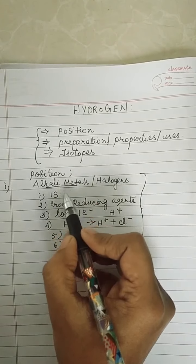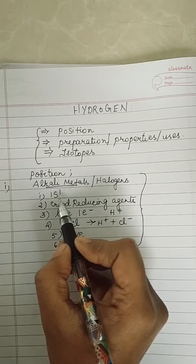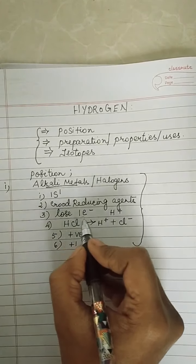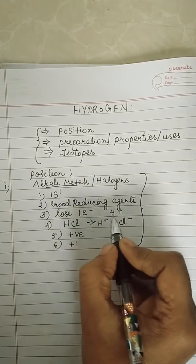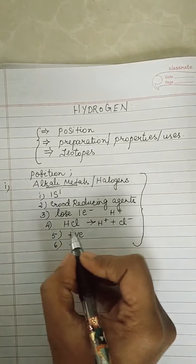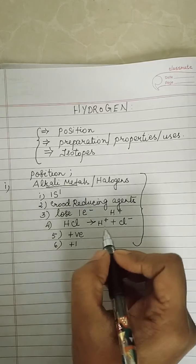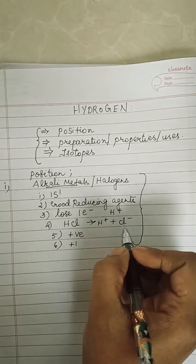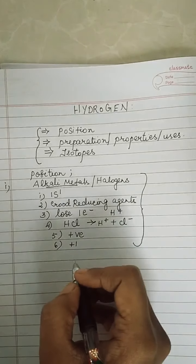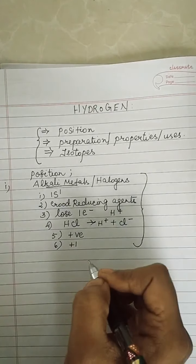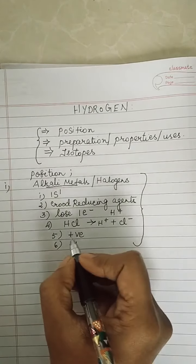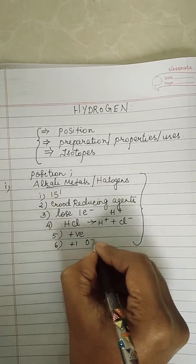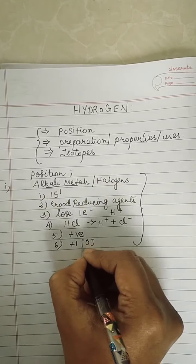To summarize: its electronic configuration is 1s¹; it is a good reducing agent; it can lose 1 electron to form H⁺; during electrolysis you get a positive ion and a negative ion deposited at the corresponding electrodes; it is electropositive in nature; and it shows a +1 oxidation state.